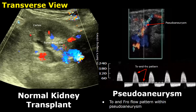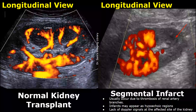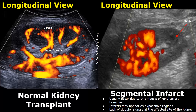Segmental infarcts can occur in our renal transplant due to thrombosis of renal artery branches. The infarcts may appear as hypoechoic regions, but they are best seen with Doppler. Here, power Doppler is applied and we do not see any Doppler signals within the lower pole of the kidney, indicating infarction.